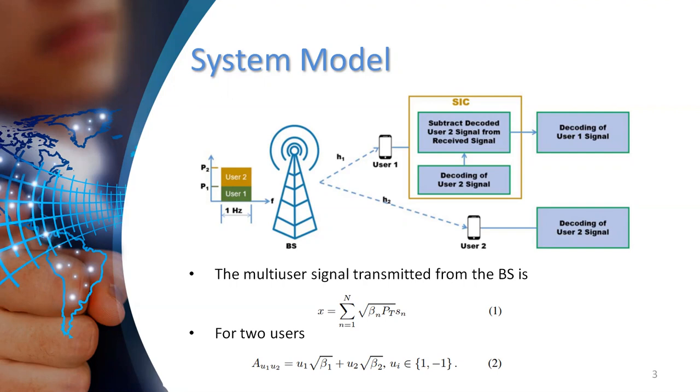And usually one of these users is close to the base station, which applies detection to decode its own signal and the other user is far away from the base station.